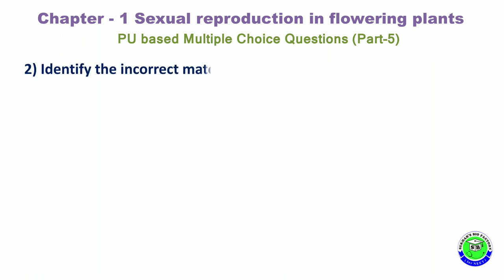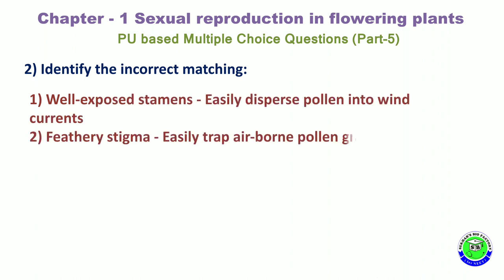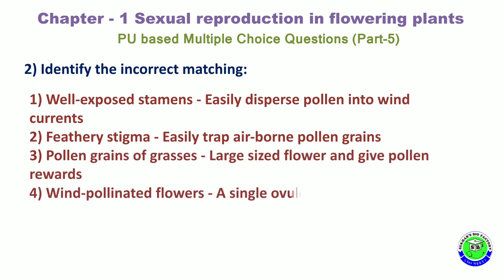Question 2. Identify the incorrect matching. Option 1: Well-exposed stamen — it can easily disperse pollen grains into wind current. Option 2: Feathery stigma — easily trap airborne pollen grains. Option 3: Pollen grains of grasses — large-sized flowers and give pollen rewards. Option 4: Wind-pollinated flower — it consists of a single ovule in each ovary. The correct answer is the 3rd option.